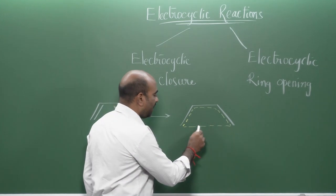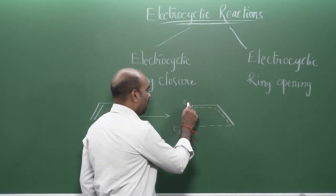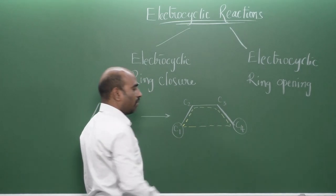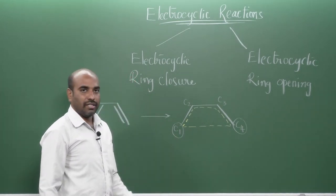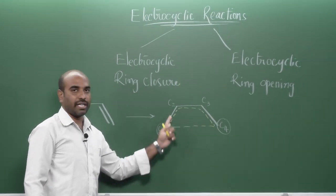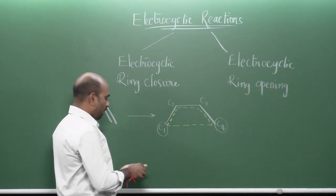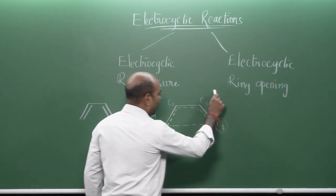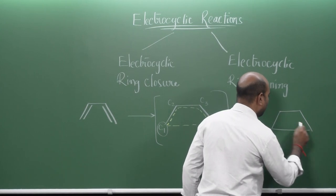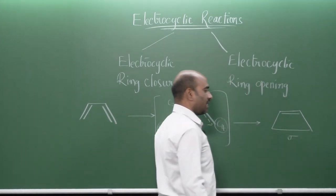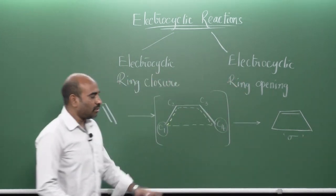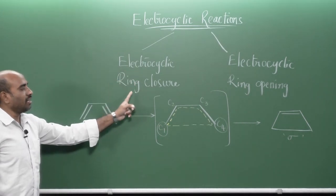The terminal carbon atoms C1 and C4, if you observe clearly, are involved in the generation of a new sigma bond via the cyclic reorganization of the pi electrons. This becomes the cyclic transition state, and after this you will see a cyclic molecule with a newly formed sigma bond. We call this the electrocyclic ring closure reaction.